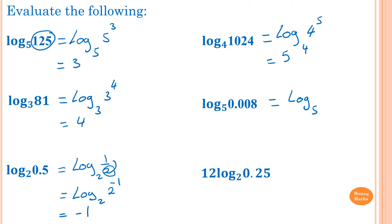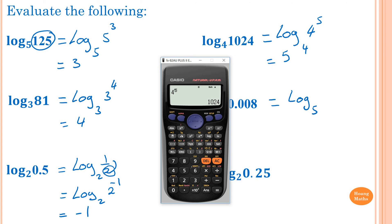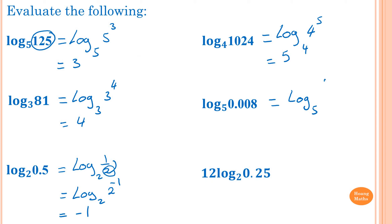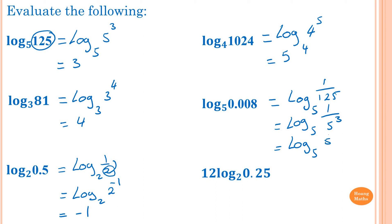Now log base 5 of 0.008. I type 0.008, press equal and then the S to D button to get 1 over 125. And 125 is 5 to the power 3. So this equals log base 5 of 1 over 5 to the power 3, which is log base 5 of 5 to the negative 3. The answer is negative 3.